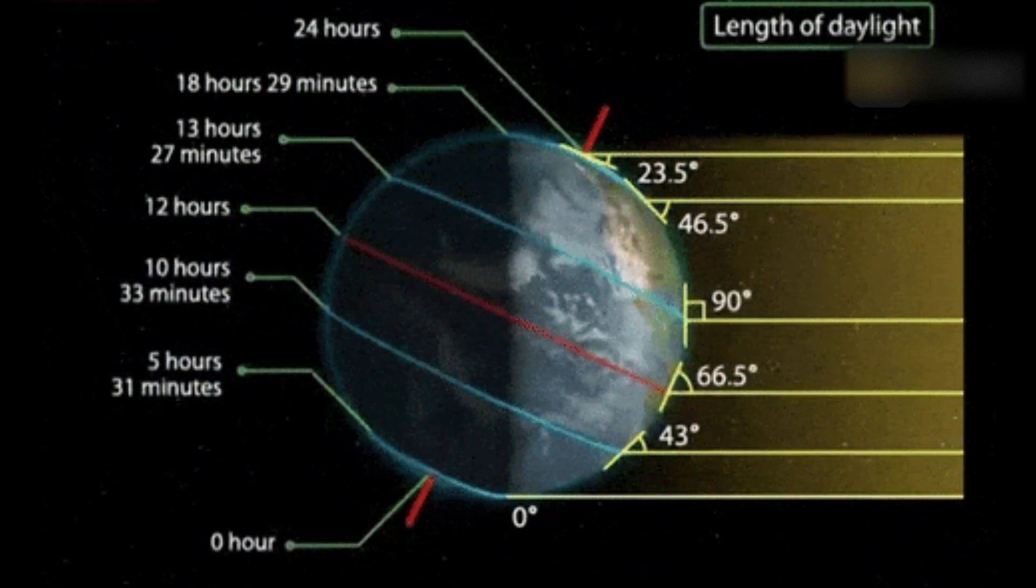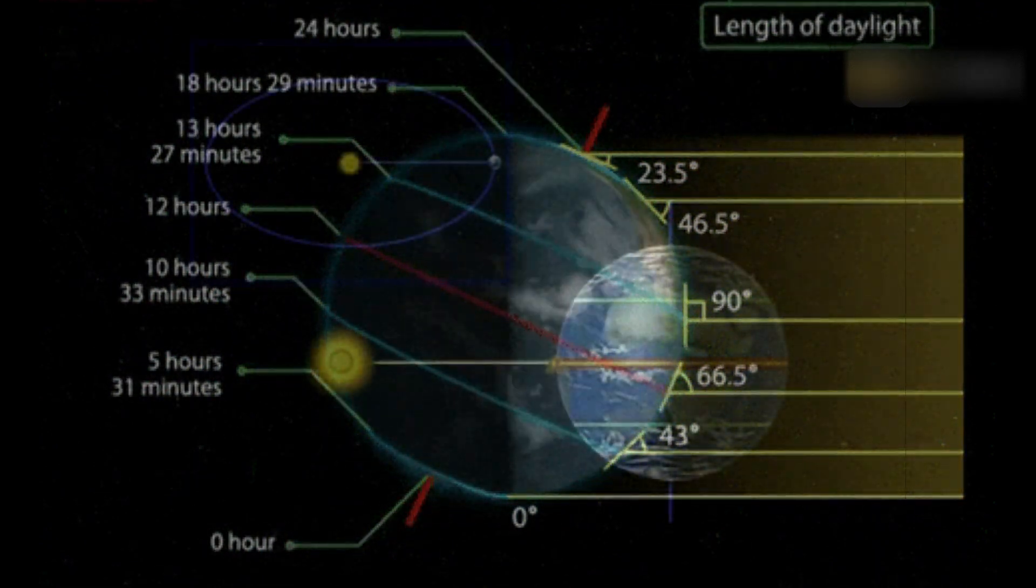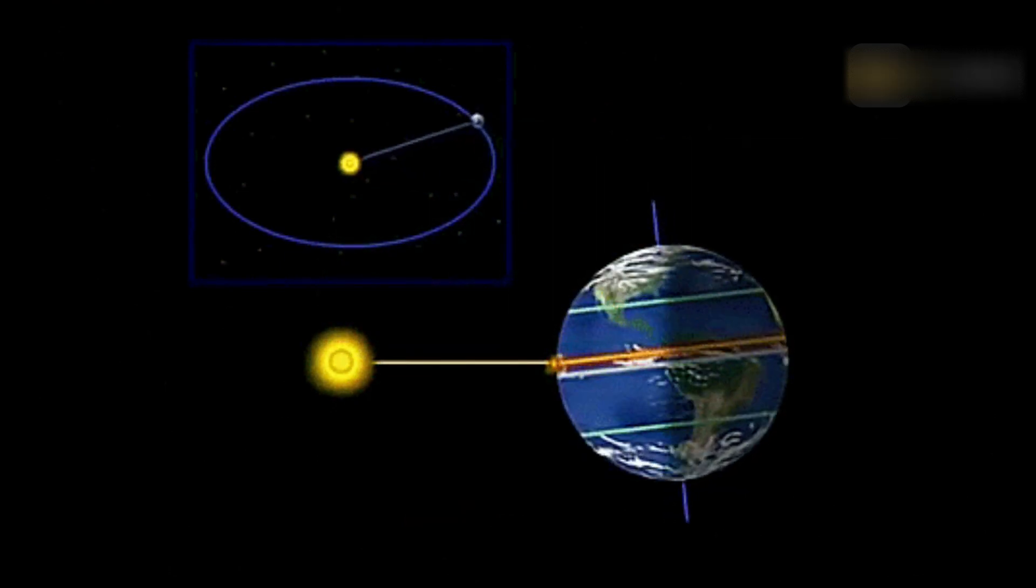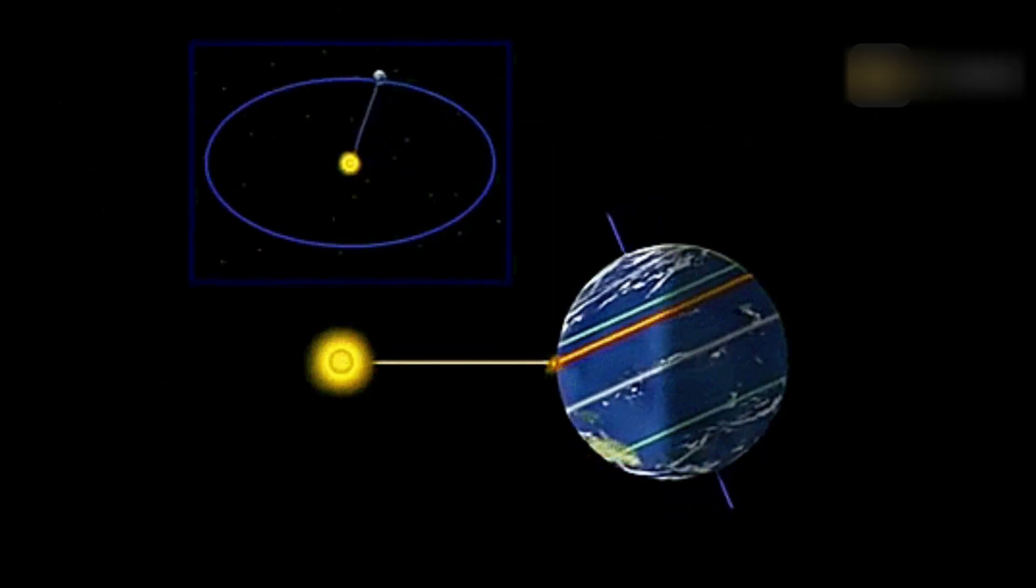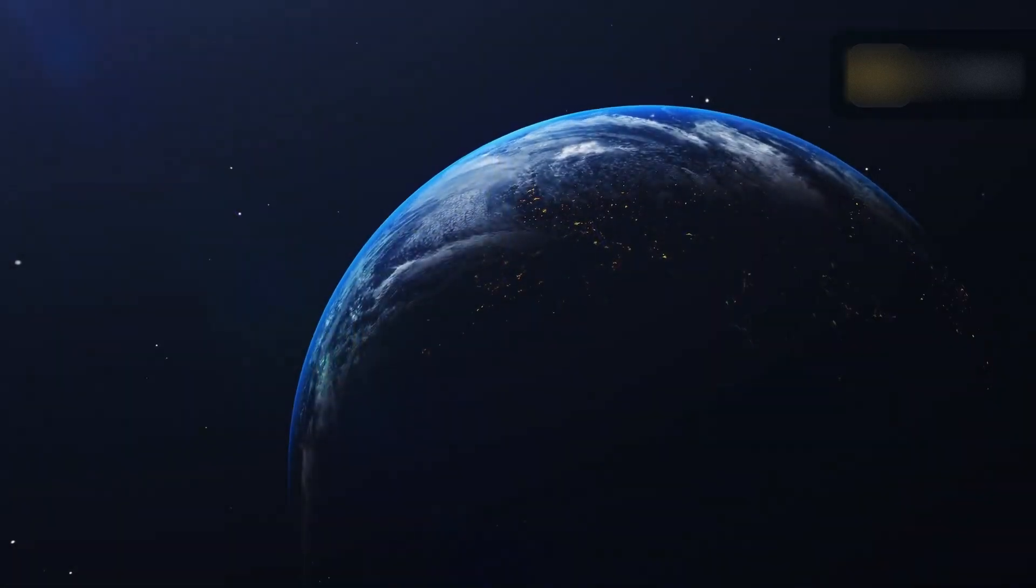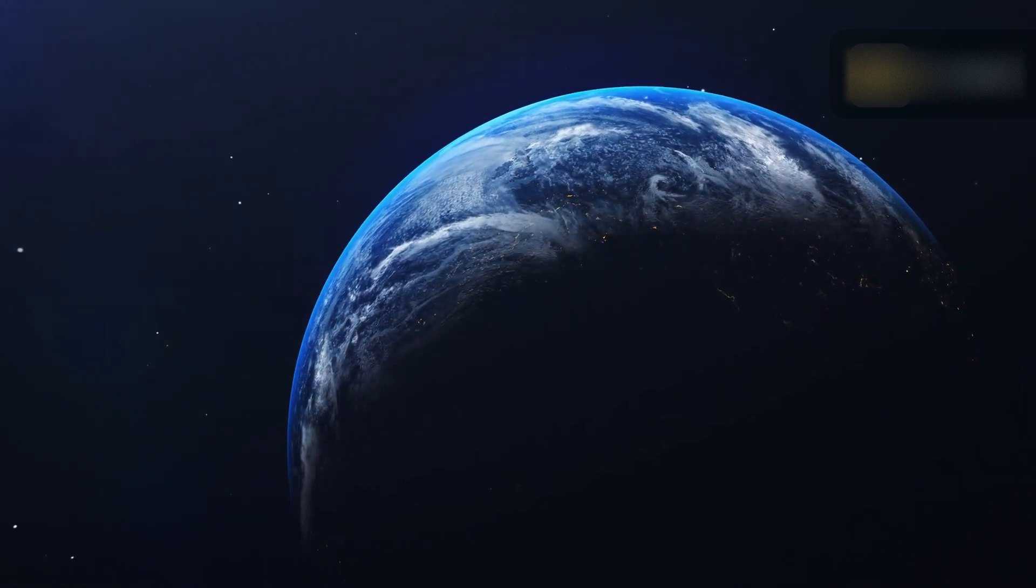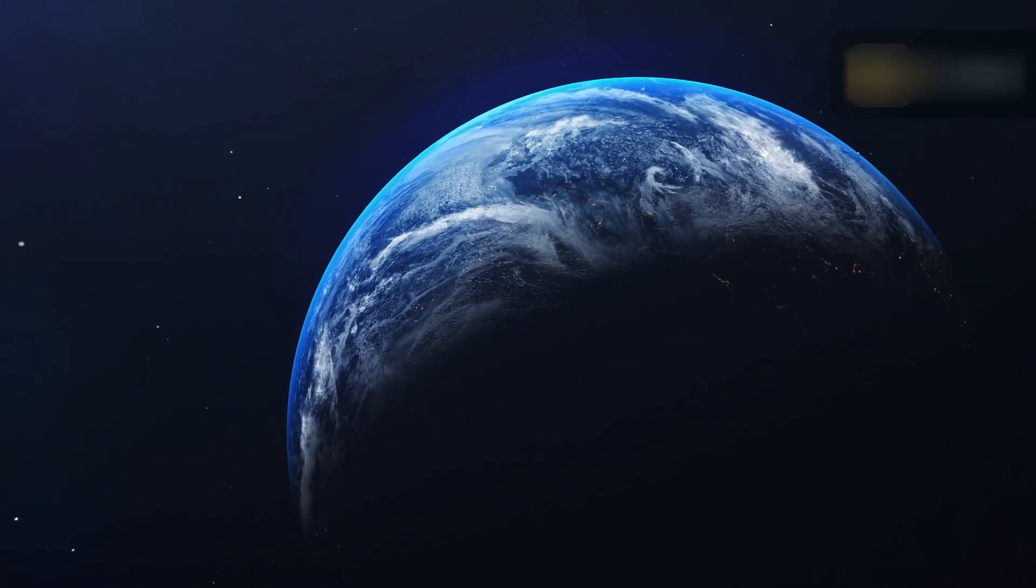The March equinox allows you to measure tropical years, the average time the Earth needs to complete its perfect orbit around the sun. The tropical year, also known as the year of the sun, is approximately 365 days, 5 hours, 48 minutes and 45 seconds. It can change up to 30 minutes each year.